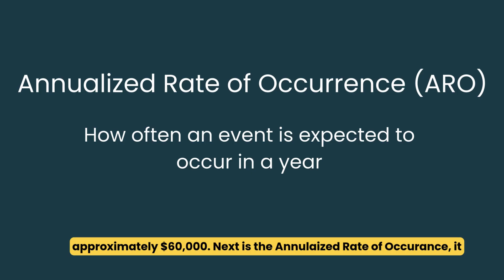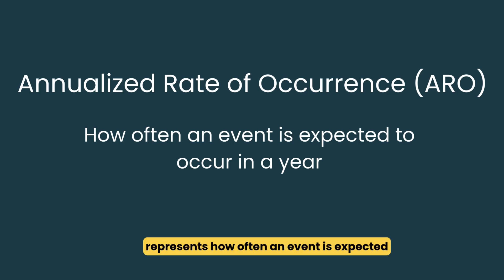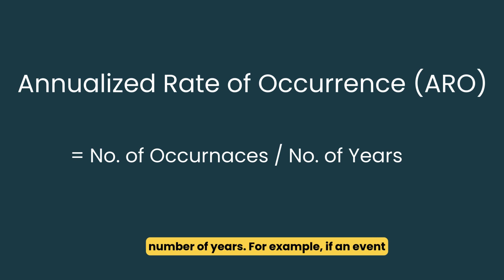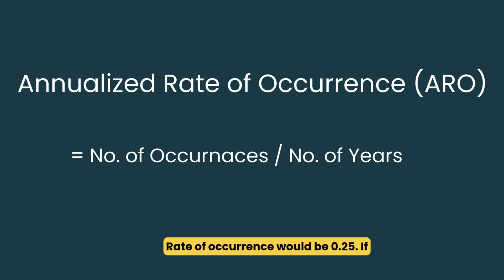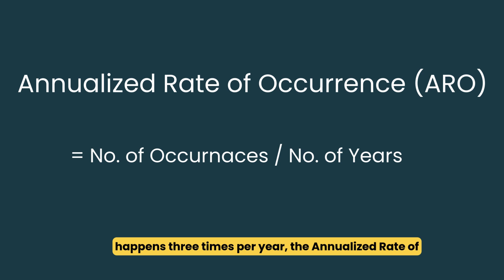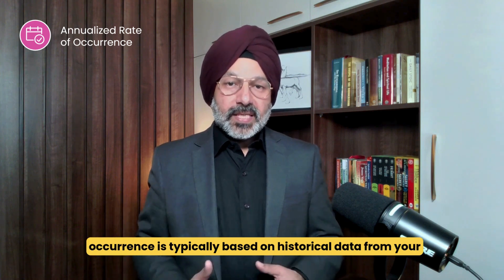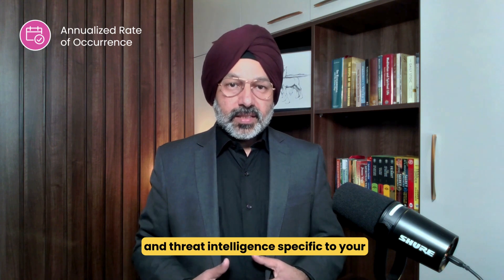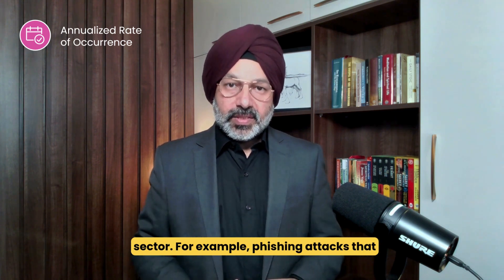Next is the annualized rate of occurrence. It represents how often an event is expected to occur in a year, calculated as number of occurrences divided by number of years. For example, if an event happens once every four years, the annualized rate of occurrence would be 0.25. If it happens three times per year, the annualized rate of occurrence would be 3. The ARO is typically based on historical data from your organization, industry statistics, and threat intelligence specific to your sector.